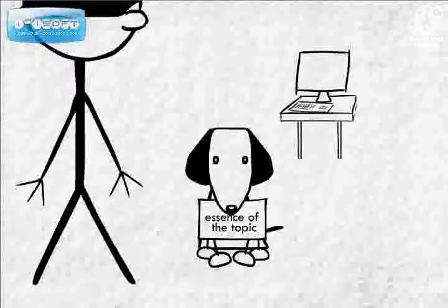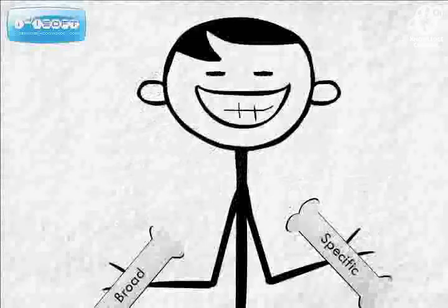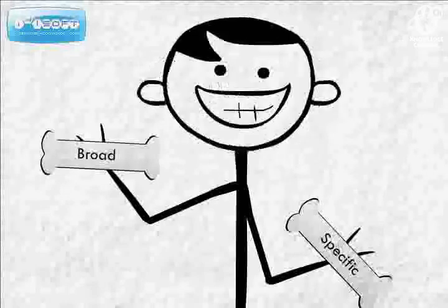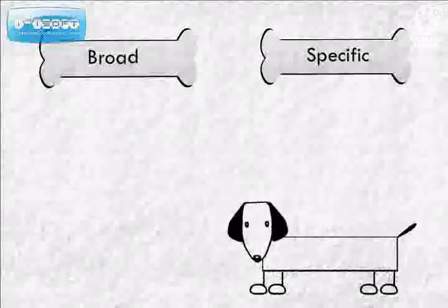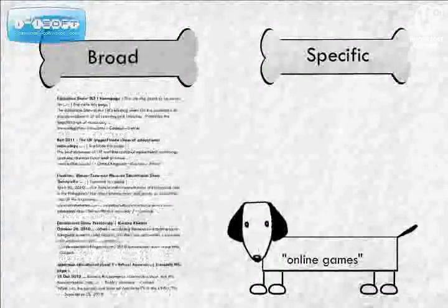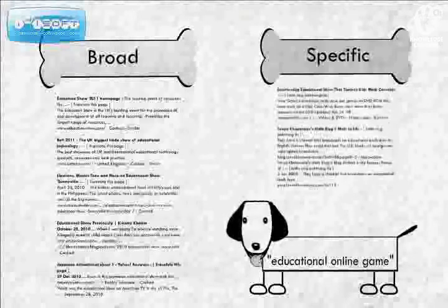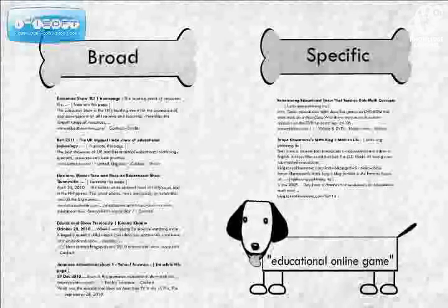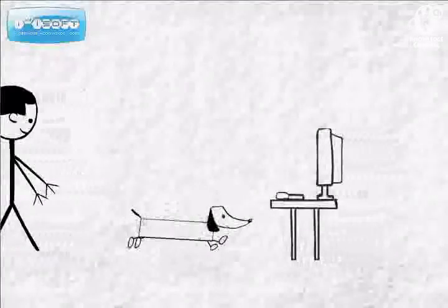A good keyword should capture the essence of the topic that you're looking for. It can either be broad or specific, depending on the information you're looking for. For example, 'online games' is a very broad keyword that will give you millions of search results. 'Educational online games' is a more precise keyword that will result in fewer but more specific search results.